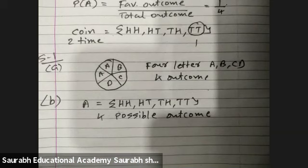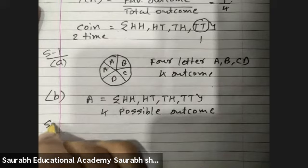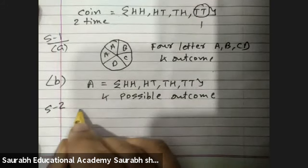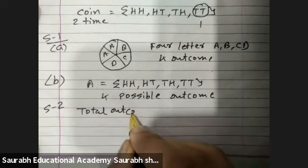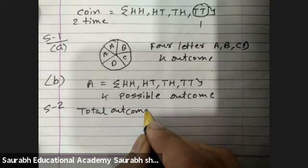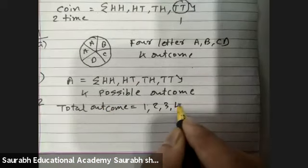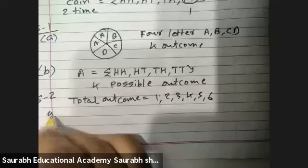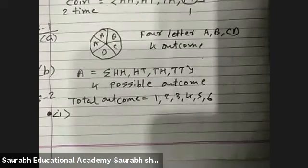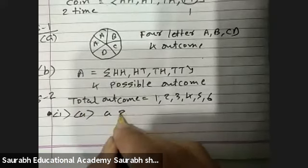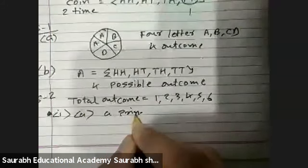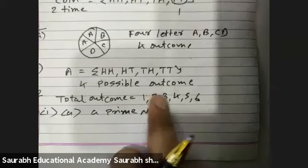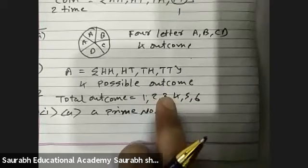Question number two: When a die is thrown, list the outcomes. The total outcomes will be 1, 2, 3, 4, 5, and 6. First part: what are the prime numbers in 1, 2, 3, 4, 5, 6? Prime numbers are 2, 3, and 5.